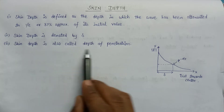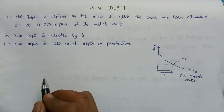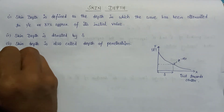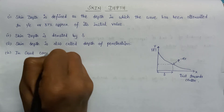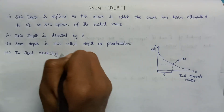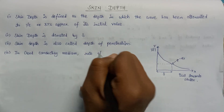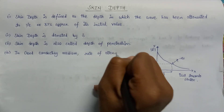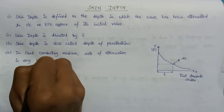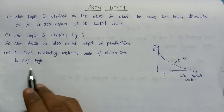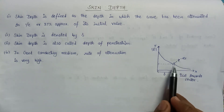Skin depth is also known as depth of penetration. In the good conducting medium, the rate of attenuation is very high. Since the rate of attenuation is very high, the amplitude will decrease continuously, and this is denoted by the factor e to the power minus alpha Z, where alpha is the attenuation factor.